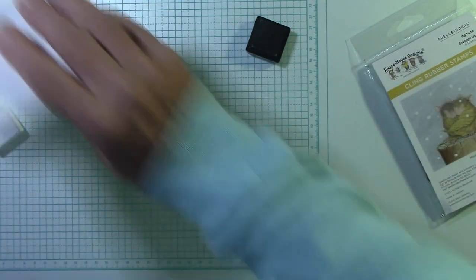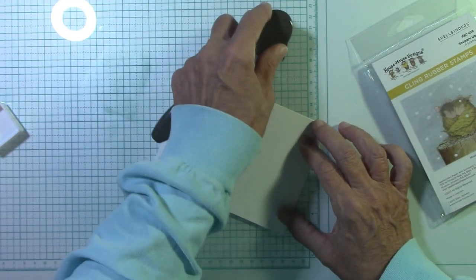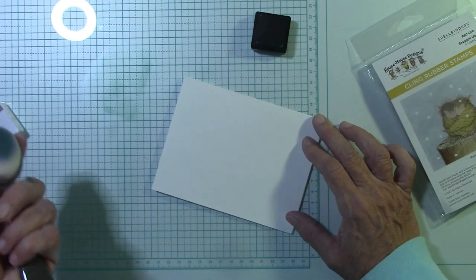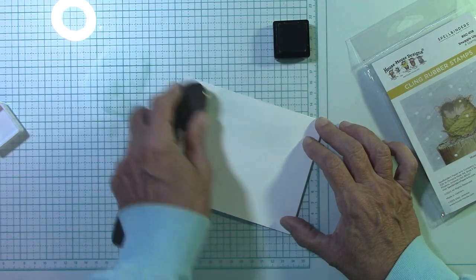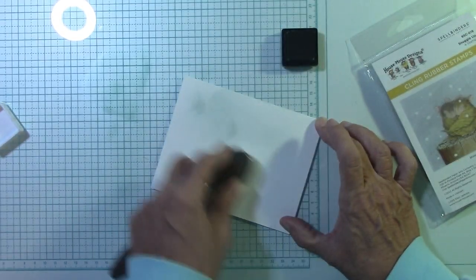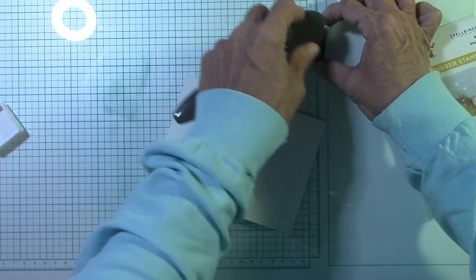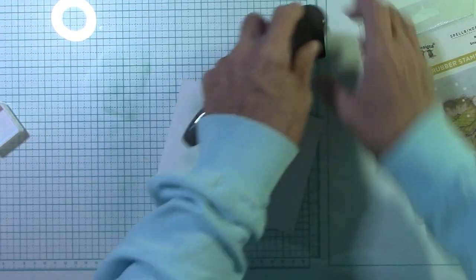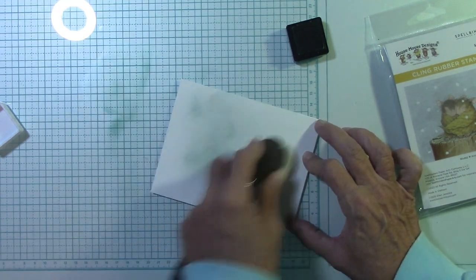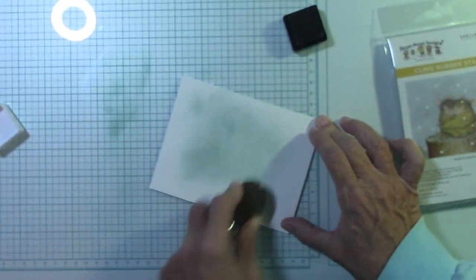Then I'm going to take the front of the card base, just the front right here, and I'm going to do the same thing because I want the backgrounds to blend. I'm kind of not going around the edges, I just really want it in the center because this is where our little mice are going to go, right?